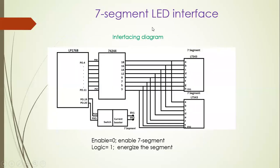Now let us see the interfacing diagram. We have a controller LPC1768 and two 7-segment displays, that is 2 LT543. I will be displaying from 0 to F. In between I have a line driver IC because the operating voltage of the controller is 3.3V whereas the segment is 5V. To match the voltage levels I use the line driver IC. Port 0 pin 4 to pin 11 are connected to the 7-segment LED. Port 0 pin 19 and pin 20 are connected to the enable pin. The enable is an active low signal — logic 0 enables the segment and logic 1 energizes the LEDs, because it is a common cathode configuration.